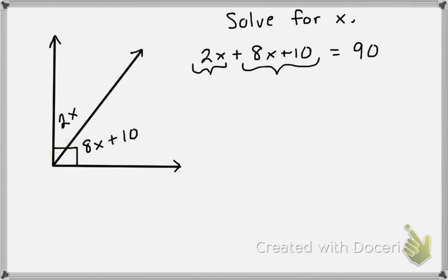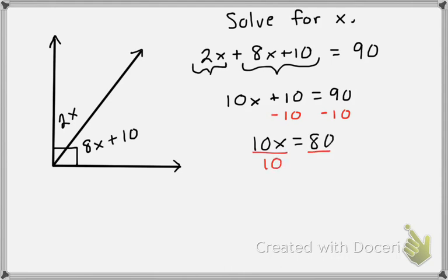So now we just need to solve for X. So I'm going to combine like terms. I'm going to subtract 10 from each side and then divide both sides by 10. So I get X equals 8. And they did just want us to solve for X, so we are done.